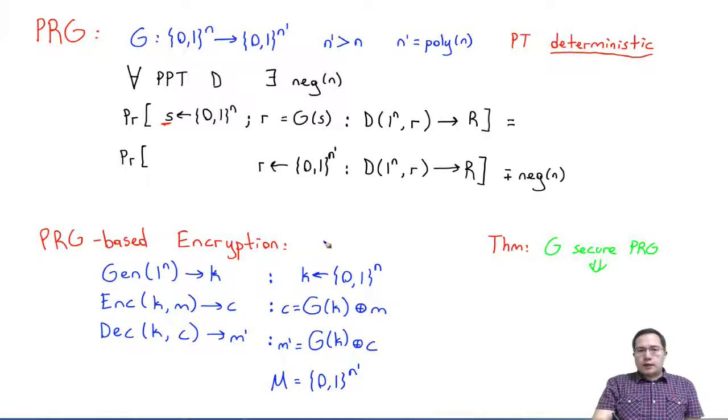So, let me call this scheme X. We will prove that if G is a secure PRG, then X is a secure encryption scheme under single message eavesdropper security. Remember the eavesdropper security game that we defined. We already defined it for a single message. So, X will be secure under that game. We are going to prove this next.